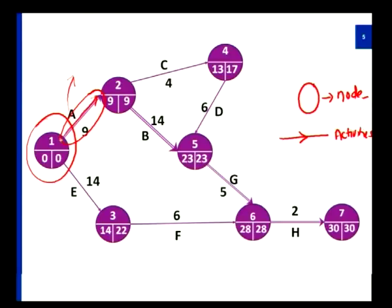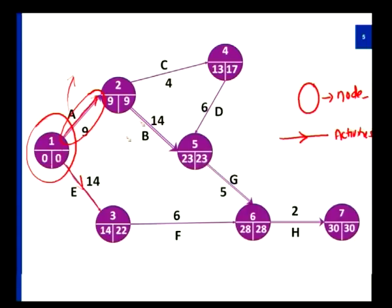By my understanding of the previous table, A and E are two different activities which do not have any prerequisite. I start with A here and end up somewhere after some point in time. At the same time, I can also start with E — it need not end at the same time as A. E also takes a particular time and flows through the other flow in the diagram. After completion of A, B and C are the two parallel activities I can continue. B and C are done in parallel. After completion of C, I can start with D. B and D then join together, making an initiative to start with G.